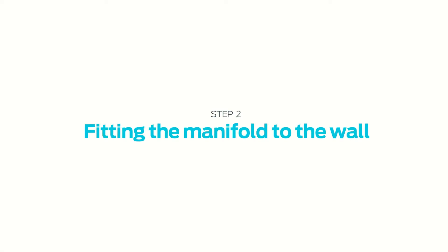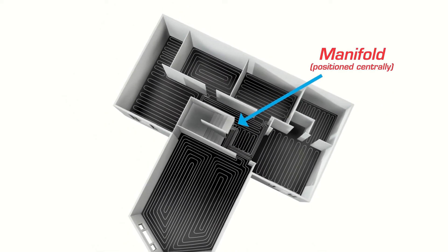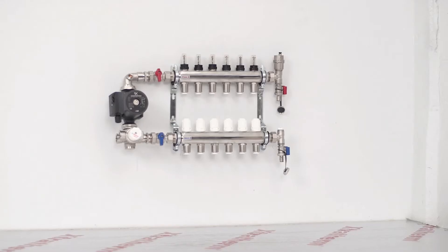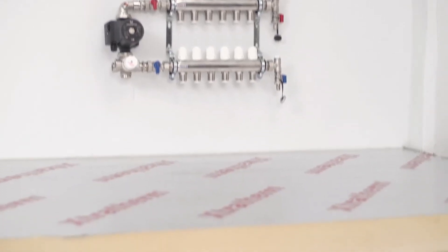Fitting the manifold to the wall. The manifold must be located as centrally as possible to the circuit it's feeding, allowing enough height to accommodate the installation and screed depth.